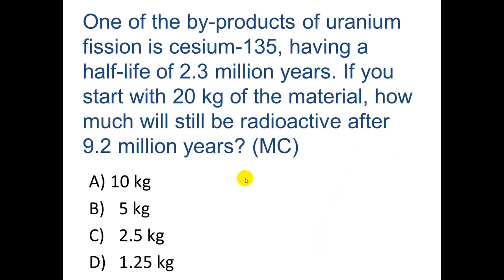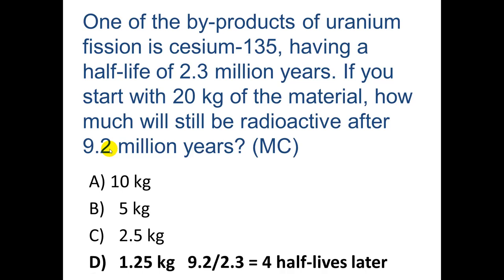Here's a question about half-life. One byproduct of uranium fission is cesium-135, which has a half-life of 2.3 million years. If you start with 20 kilograms, how much will still be radioactive after 9.2 million years? The approach: 2.3 goes into 9.2 four times. So starting with 20 kg, you divide by 2 four times: 20 to 10, 10 to 5, 5 to 2.5, and 2.5 to 1.25 kilograms. That's the answer.